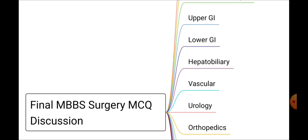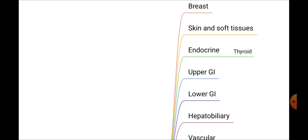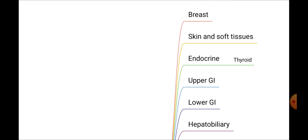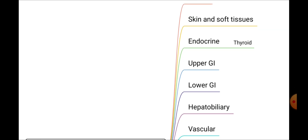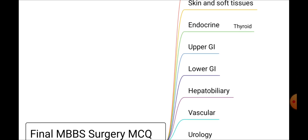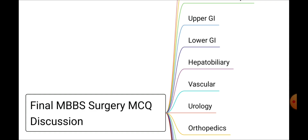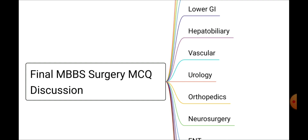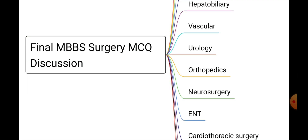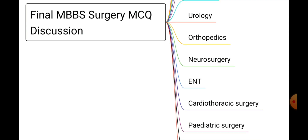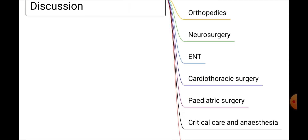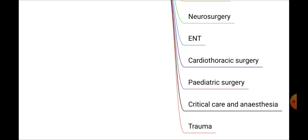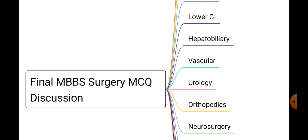Taking each topic separately: first we will start from breast disorders, then skin and soft tissue disorders, then endocrine disorders including the thyroid, upper gastrointestinal disorders, lower GI disorders, then hepatobiliary, vascular, urology, orthopedics, neurosurgery, ENT, cardiothoracic surgery, pediatric surgery, critical care and anesthesia, and trauma. These are the topics which will be asked in your Final MBBS examination.